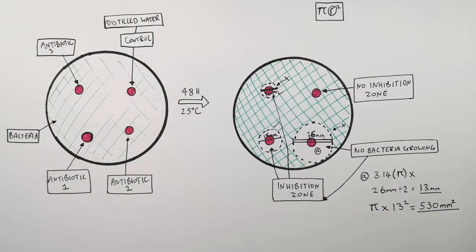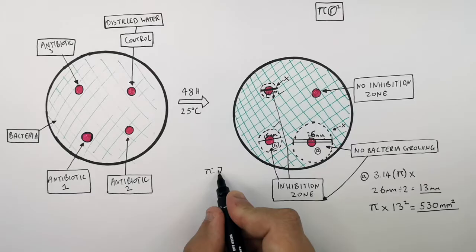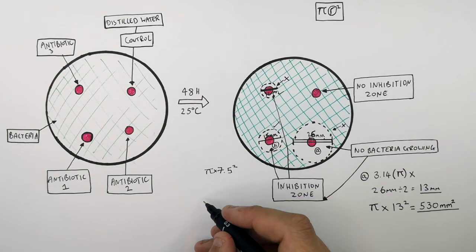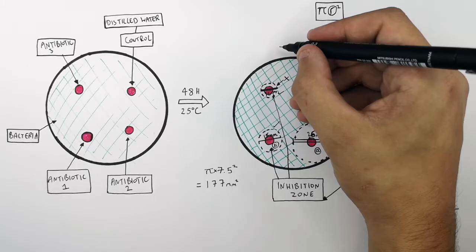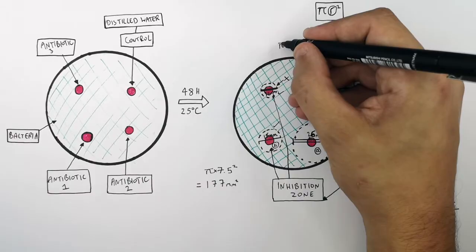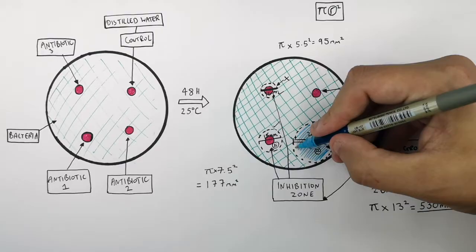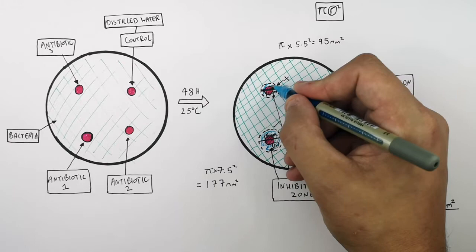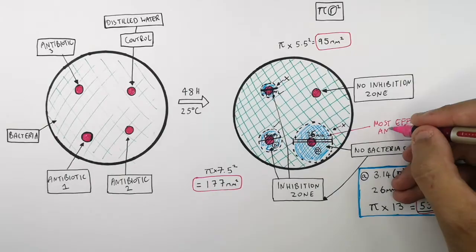The diameter of the zone of inhibition surrounding antibiotic 1 is 15 mm, so the radius is 7.5 mm. Area = π × 7.5² = 177 mm². For antibiotic 3: π × 5.5² = 95 mm². The zone of inhibition surrounding antibiotic 2 (530 mm²) is the largest, antibiotic 1 (177 mm²) is second, and antibiotic 3 (95 mm²) is the smallest. This means antibiotic 2 is the most effective against that specific bacteria.